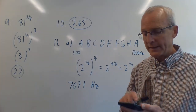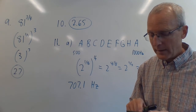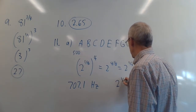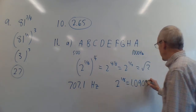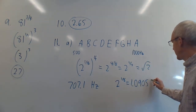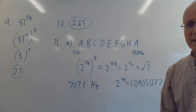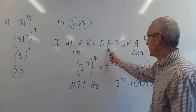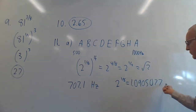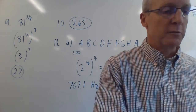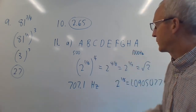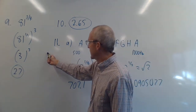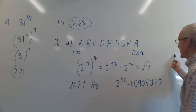You could also compute 2^(1/8) ≈ 1.0905 and multiply by it four times — you'd get the same 707.1 Hz if you keep enough decimal places. The next higher A is 1000 Hz (double 500), the next lower A would be 250 Hz, and so on.